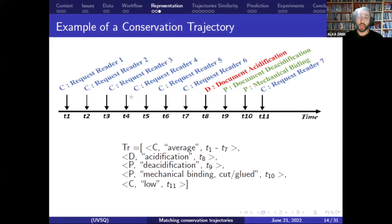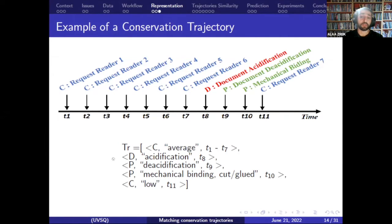For example, in this figure, we have a conservation history of a document. It starts by a sequence of six requests by the readers, represented in the trajectory by one communication event with name equal to average, followed by a degradation on the document physical state, followed by two events of conservation restoration, each represented by an event in the trajectory, and finally a communication event with a low level representing the last request on the document.